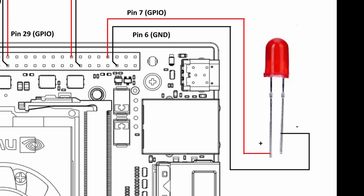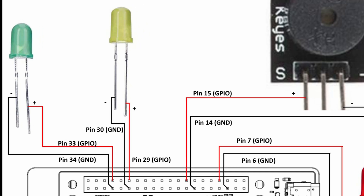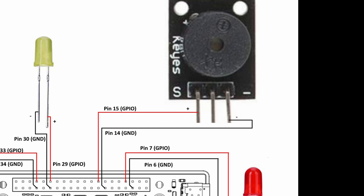For the red LED, connect the positive leg to pin 7 GPIO and the negative leg to pin 6 GND on the Jetson Orin Nano. For the yellow LED, connect the positive leg to pin 29 GPIO and the negative leg to pin 30 GND. For the green LED, connect the positive leg to pin 33 GPIO and the negative leg to pin 34 GND. For the passive buzzer, connect the positive leg to pin 15 GPIO and the negative leg to pin 14 GND.